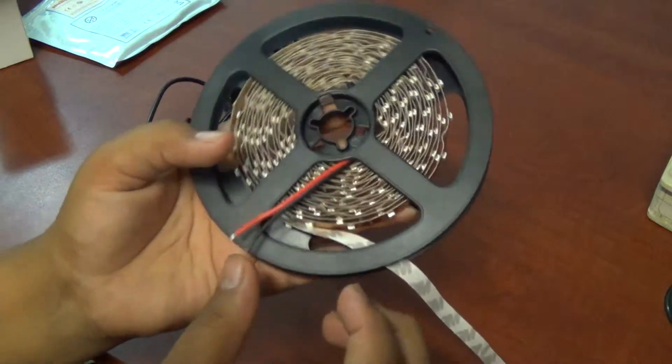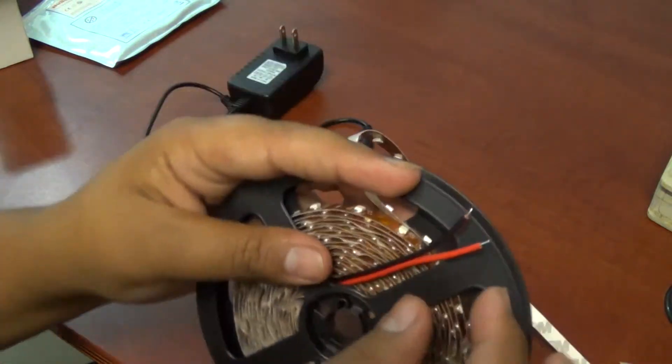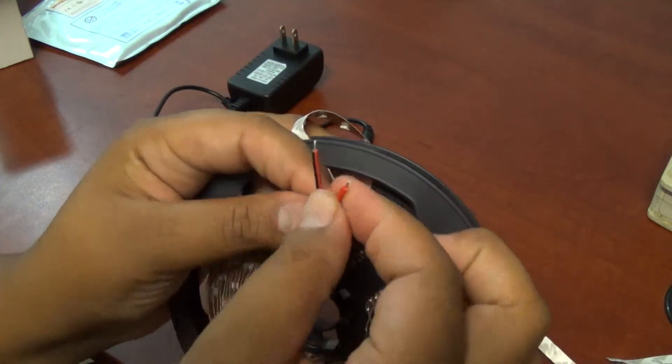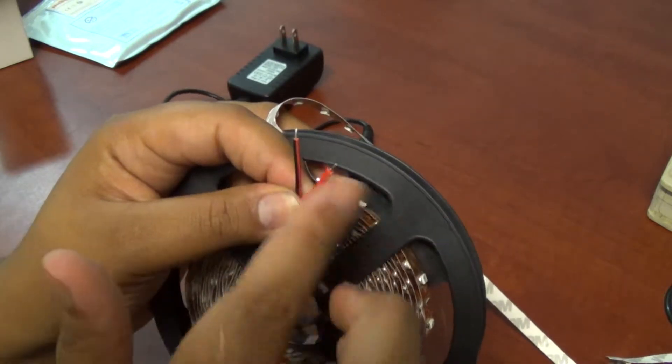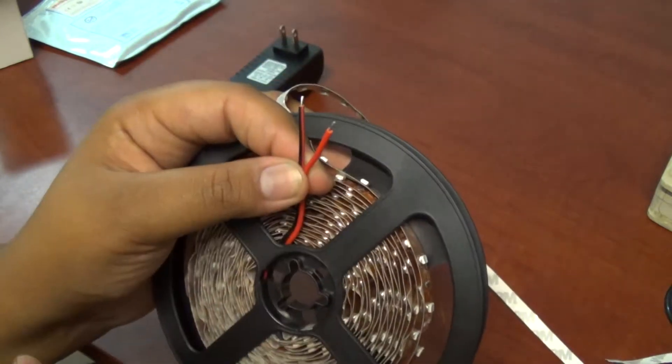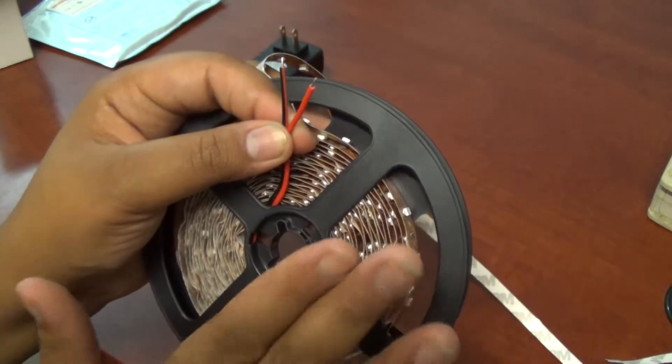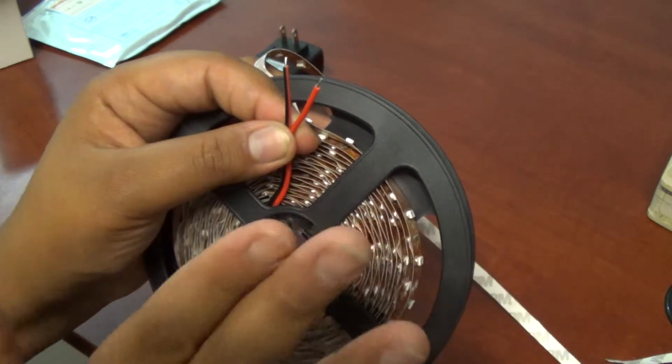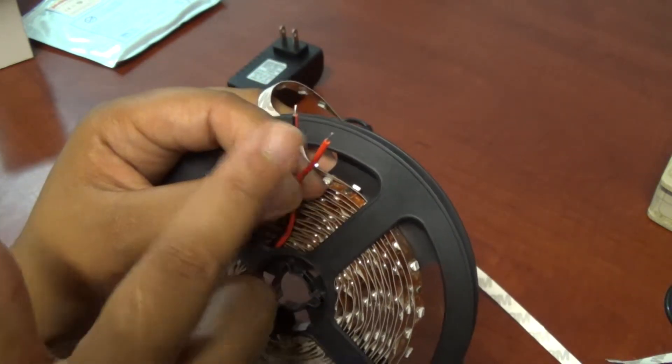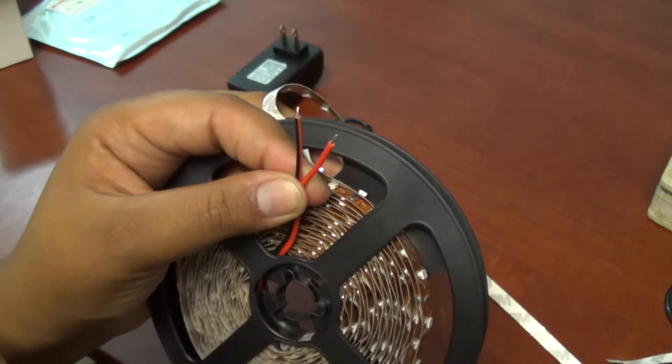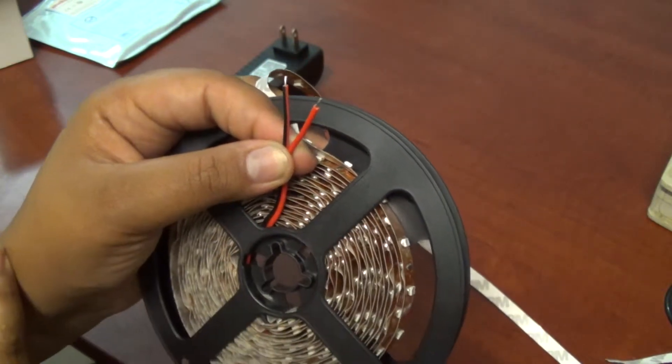And then on the other side of your LEDs you have these two cables, these two wires here. If your LEDs are too short and you want them longer, here's where you can connect another set of LED strip lights to make them longer.